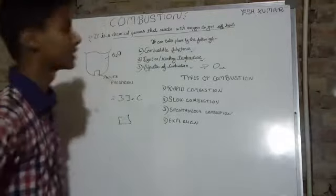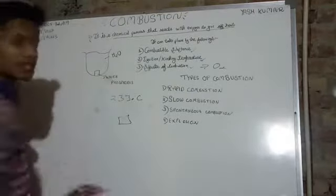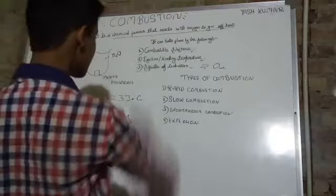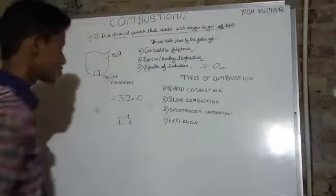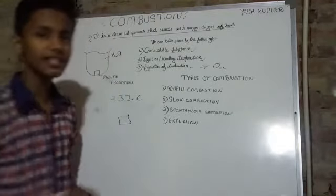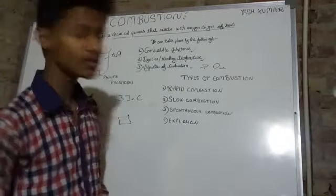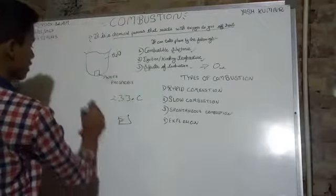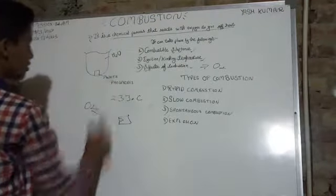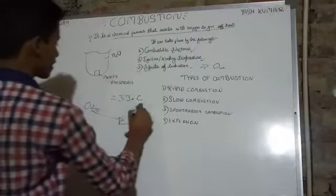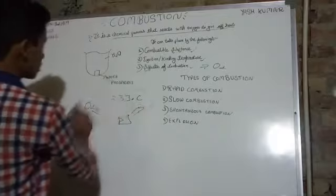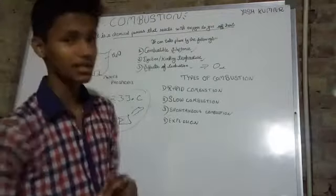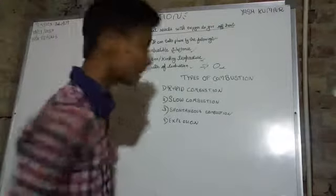233 degrees Celsius is the lowest temperature where paper starts burning — you can also search this in Google. The third thing is the supporter of combustion: we need oxygen. So if we give it oxygen, the paper starts burning. This is about combustion.